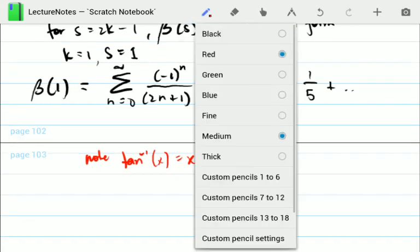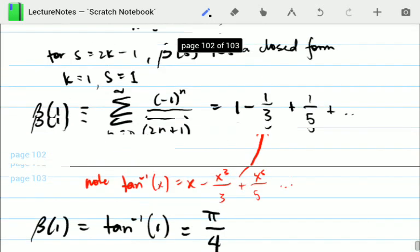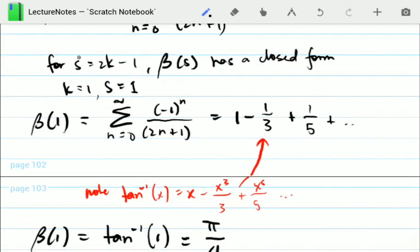So the question is, this series here looks very similar to that series when x is equal to 1. In other words, when x is equal to 1, I recover this series. Therefore, beta 1 must be equivalent to the arctangent of 1, which of course in your elementary trigonometry you know is equal to pi over 4. So this is what we mean by we can close the summation. This whole thing, 1 minus 1 third plus 1 fifth minus 1 over 7 and so on, is pi over 4. Because S is of the form 2k minus 1.